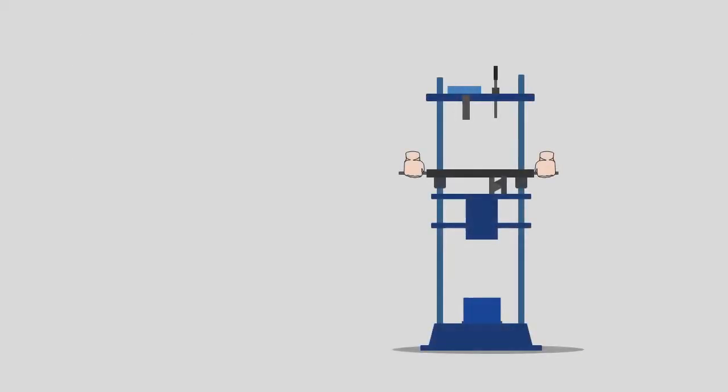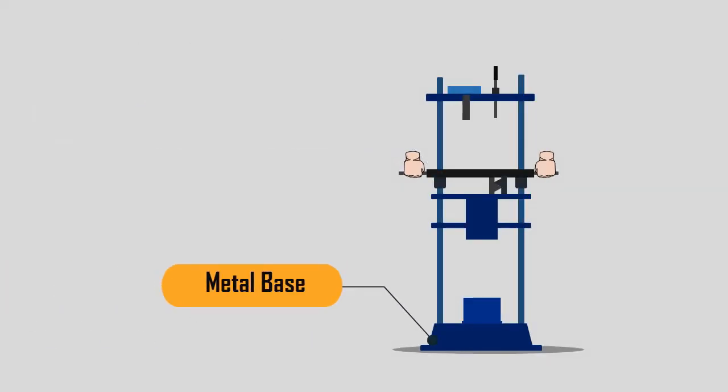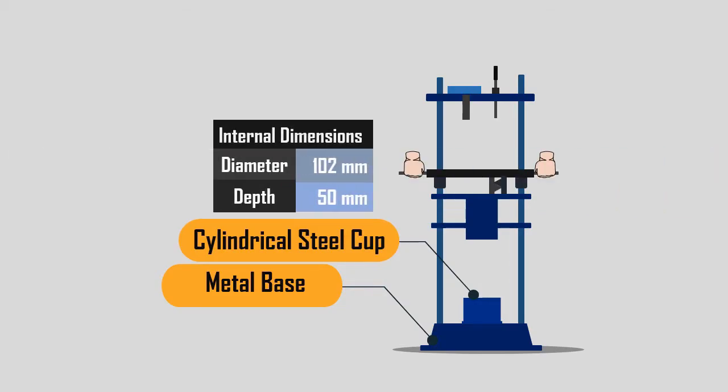The apparatus consists of an impact testing machine whose total weight ranges from 45 to 60 kg. The machine has a metal base, a cylindrical steel cup of internal dimensions 102 mm diameter and 50 mm depth.